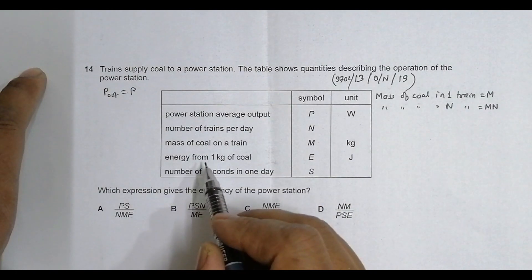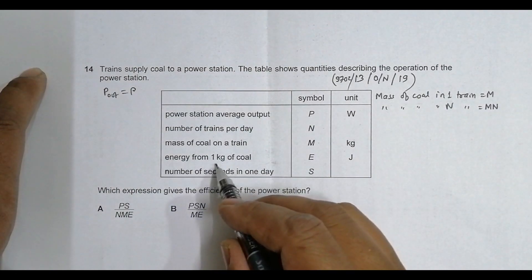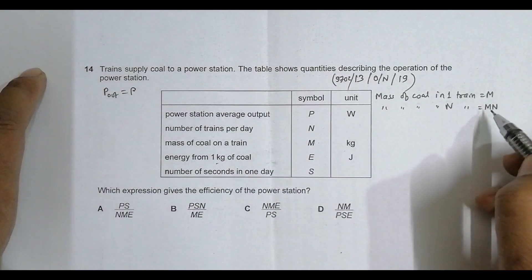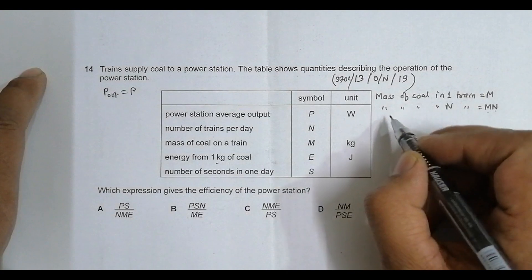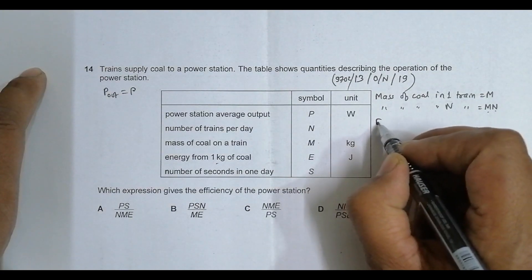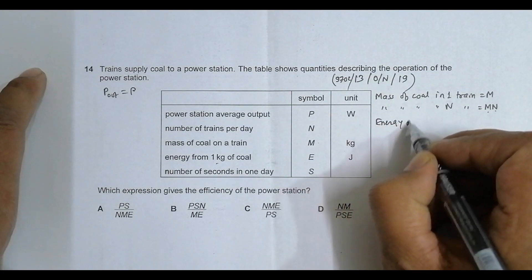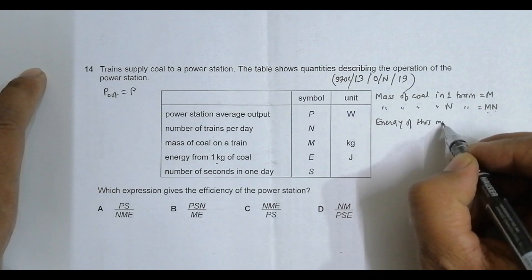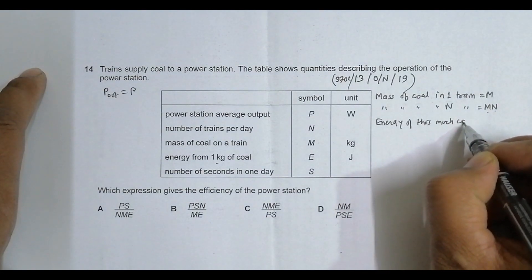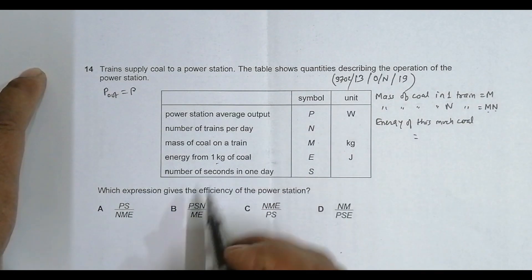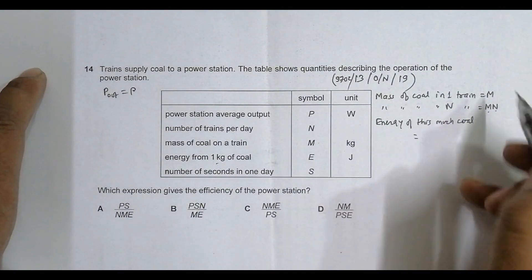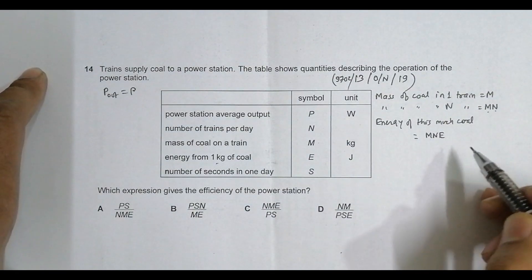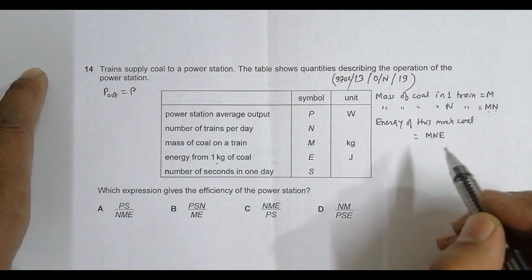Now, 1 kg of coal gives energy E, so MN kg will give energy equal to MN times E. This happens in one day.